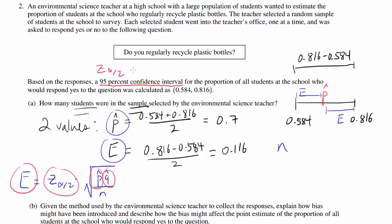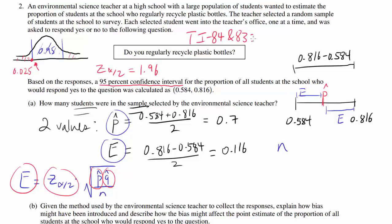We know Z sub alpha over 2 is 1.96 if you have it memorized. If not, you can still find it: for a 95% confidence interval, the area at the center of the normal distribution is 0.95, so the area in each tail is 0.025. You can use your TI-84 or TI-83 inverse normal function, plugging in area 0.025, mean 0, and standard deviation 1, and you get negative 1.96. So Z sub alpha over 2 is 1.96.